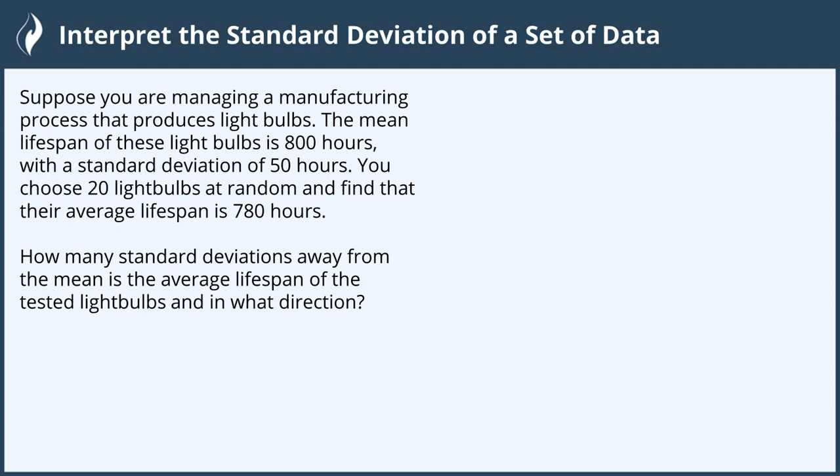We're going to find how far our sample light bulb mean is from the population mean, and then we can find out how many standard deviations they are. Let's take what we were given, in this case the sample mean, and subtract the population mean. That'll show us how far away we are from the mean, and then if we divide this by the standard deviation, that'll tell us how many standard deviations we are above or below the population mean.